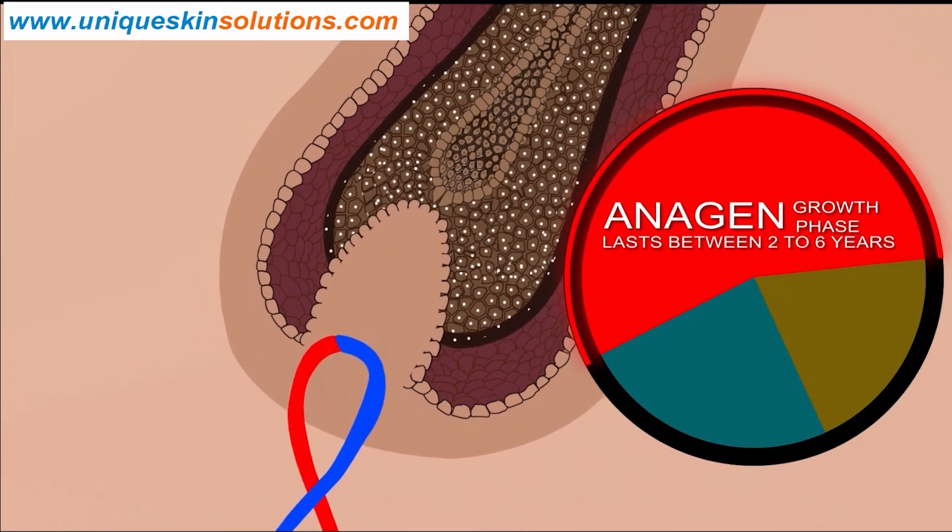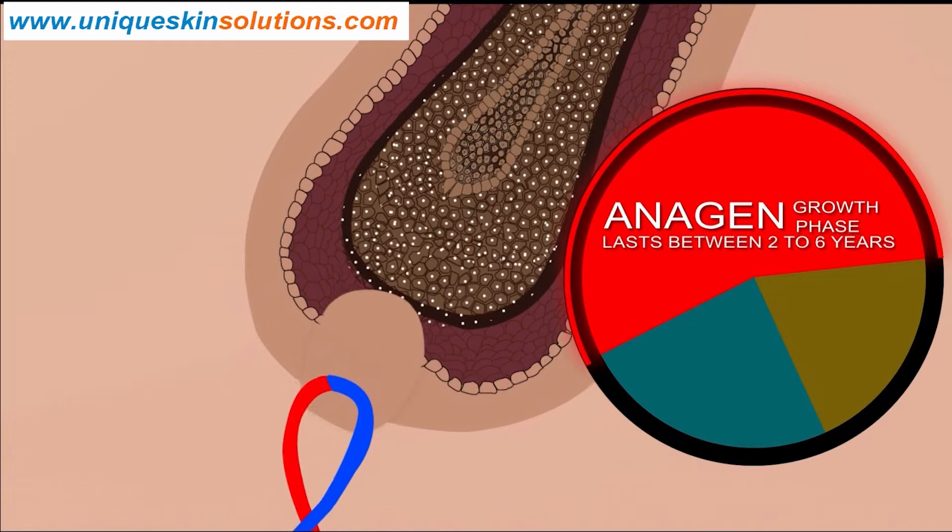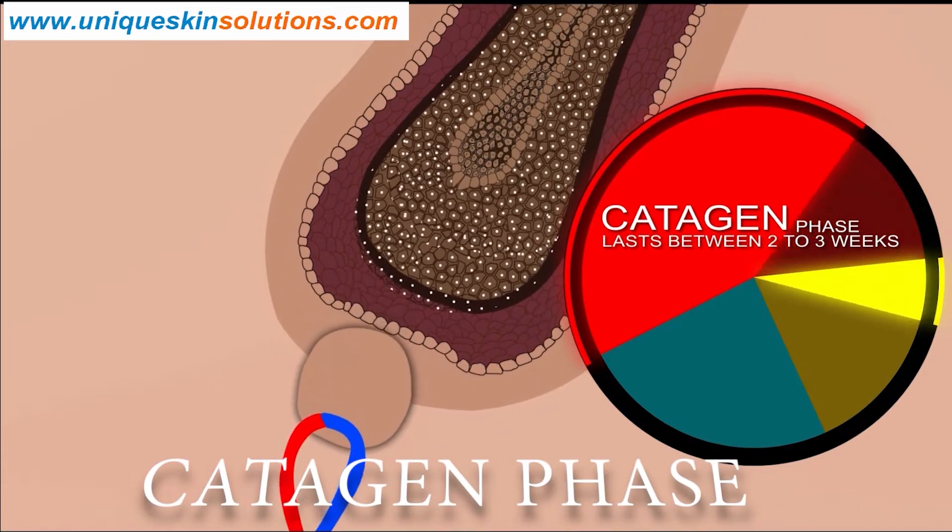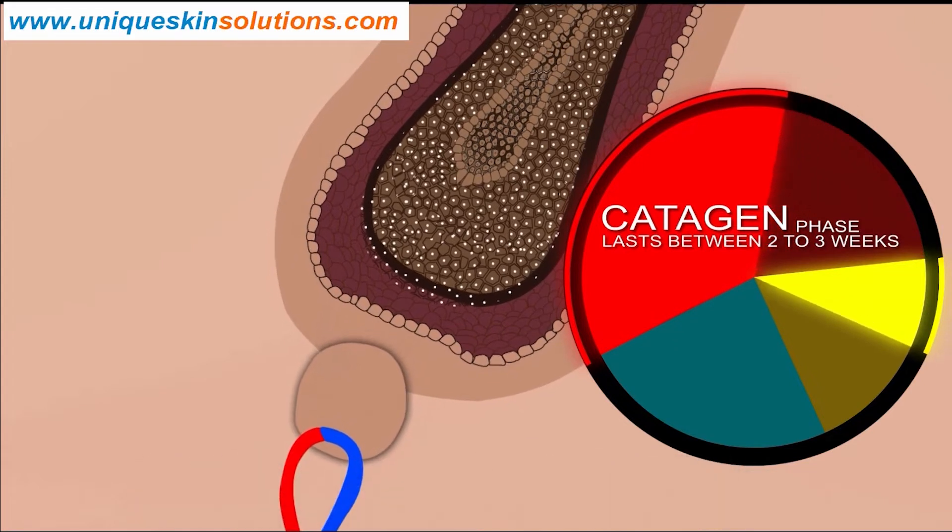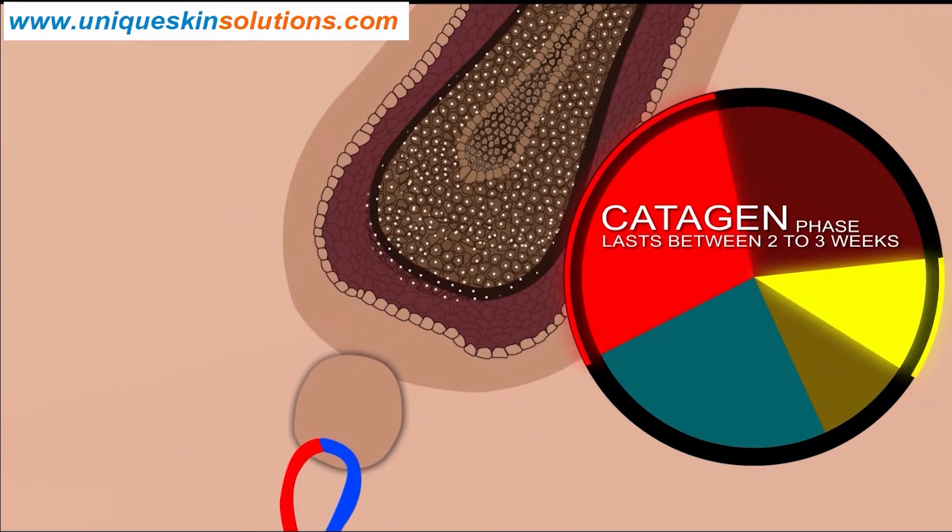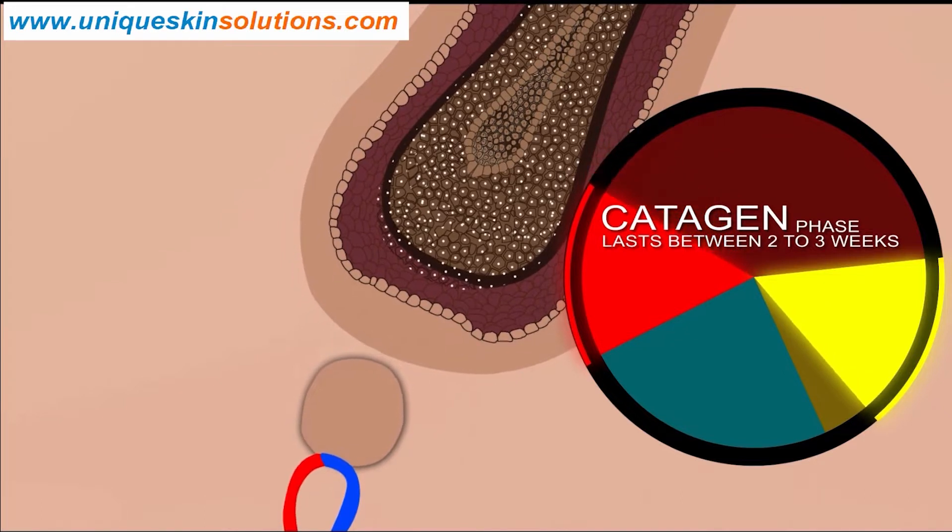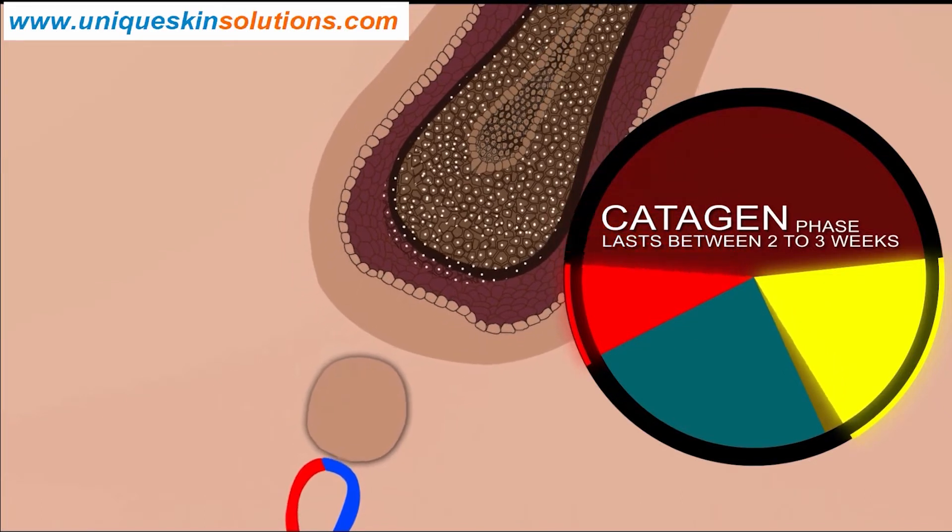the hair follicle merges into catagen phase. In this phase, matrix cells cease their activity. Hair growth stops. The base of the hair shaft migrates away from the papillary blood supply. You can appreciate how the hair follicle and dermal papillae begin to shrink in this phase.